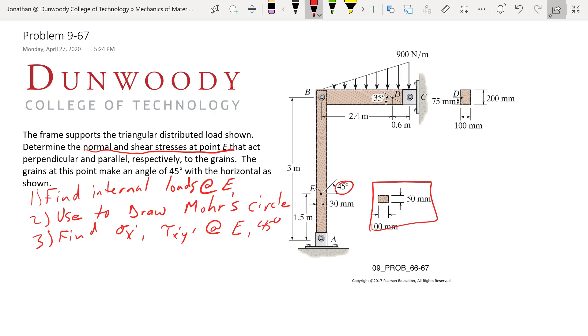We're going to start up with member BD. We have Cy, Cx, we have a pin, and we're going to have something here By, distributed load. This is 3 meters, 900 newton per meter. So if we resolve this load, we're going to get FR, 900 times 3, 3 divided by 2, and it's going to be acting at 1 meter from C.